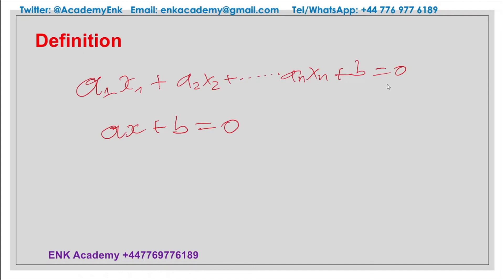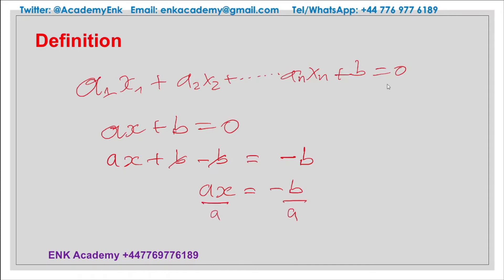In this case, we can remove b on this side and also on the other side, so we do not change the equation. This one goes away, so we have ax equal to minus b. We can then divide by a on both sides, so we don't change anything. This one goes away. We have x equal to minus b divided by a, which is the unique solution.